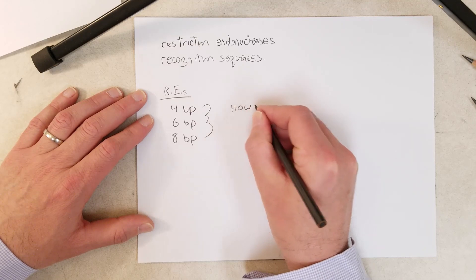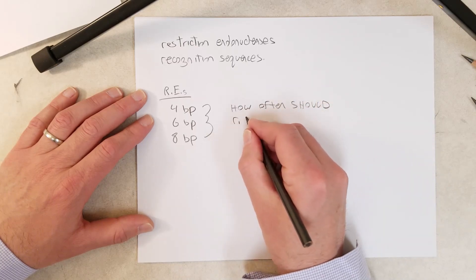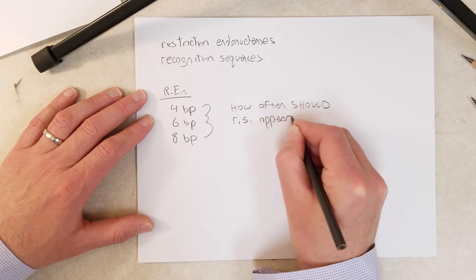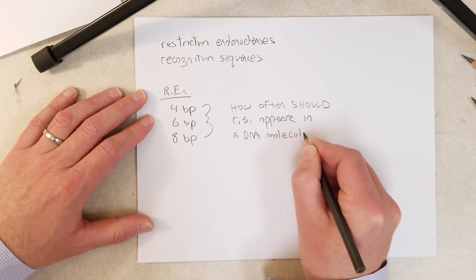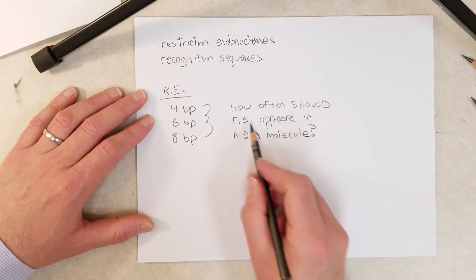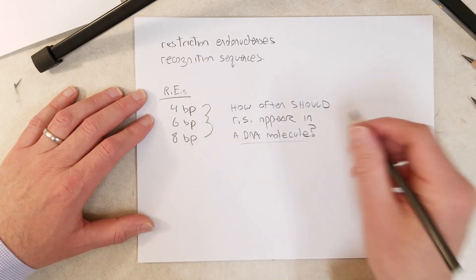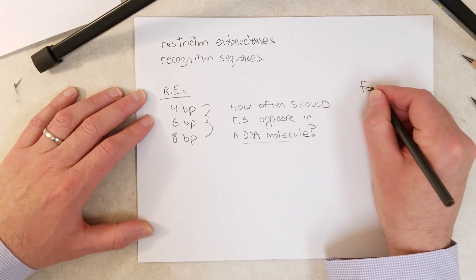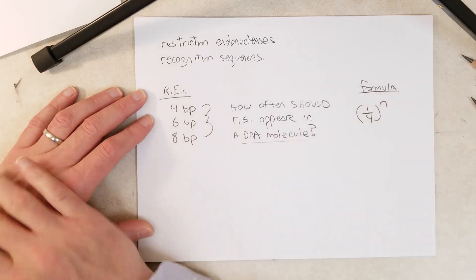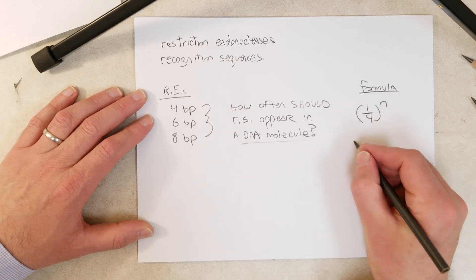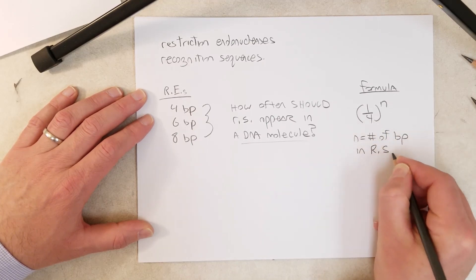How often should a recognition sequence appear in a DNA molecule? The formula assumes that the DNA molecule has a completely random sequence. The formula is one-fourth raised to n, where n is the number of base pairs in the recognition sequence.